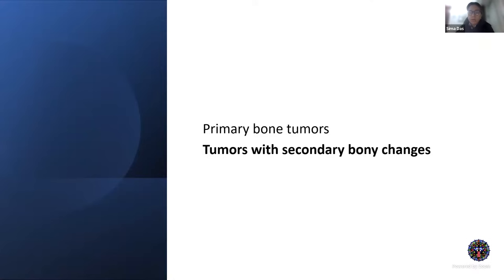While talking about primary bony tumors, many of them arise primarily from the bone, but in practice what we see more are secondary lesions — tumors which may not be arising from the bone but do cause changes in the bone, sometimes in the form of compression, lysis, or changes because of mass effect. Since these are important categories, I will go through some of those lesions to illustrate the various bone changes we might see, and then cover some of the common primary bone tumors.